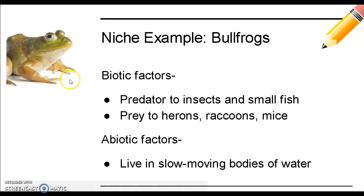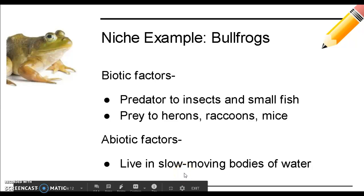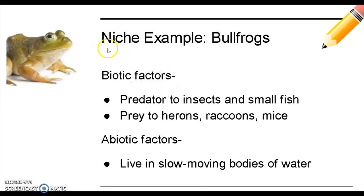Using the bullfrog as an example: some biotic factors that contribute to the bullfrog's niche are that it is a predator to insects and small fish, and it is prey to birds like herons, raccoons, and mice — referring to its position within a food chain. Its abiotic factors include that it prefers to live in slow-moving bodies of water. All of these factors help determine the bullfrog's place in the ecosystem, its job, or its niche.